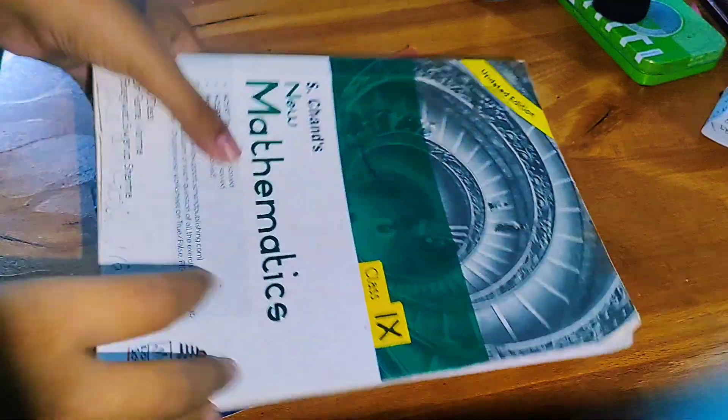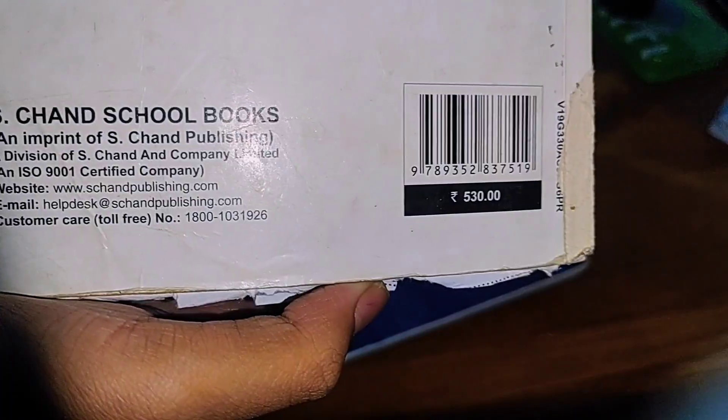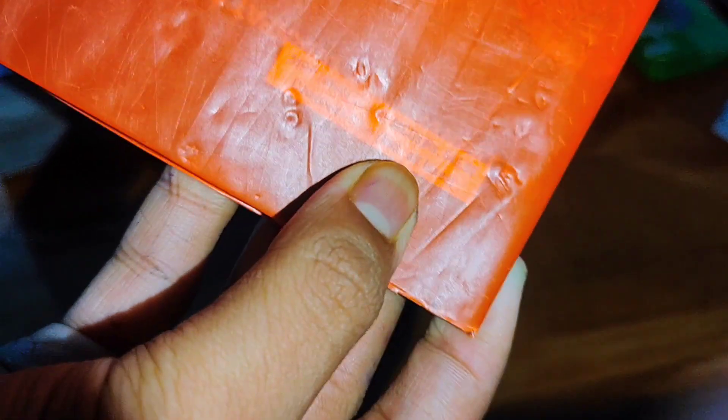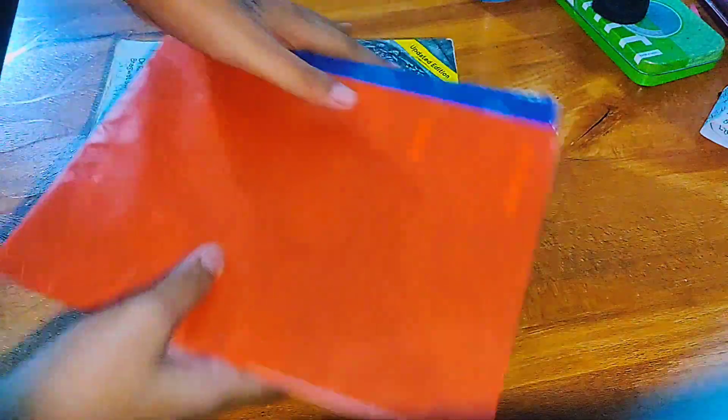The S Chand mathematics one was around 500, I guess. And the RD Sharma, I don't remember what it cost. Okay, so it cost me around probably 600, I guess. In total, I don't know. I don't really remember.